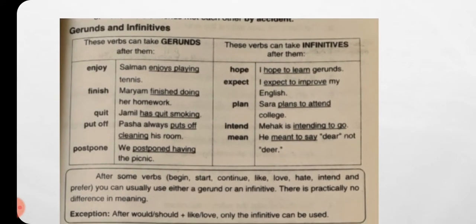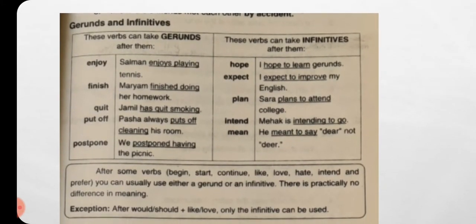Now we have gerund and infinitive. First, what is gerund? The use of -ing with the first form of a verb, working as a noun, is called gerund. And what is infinitive? The use of 'to' before the first form of a verb is called infinitive. Both of these function the same way — in Urdu, both give the meaning of 'na' (the noun form of a verb).